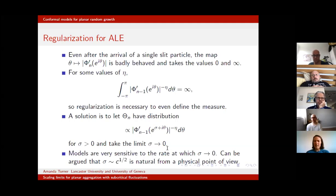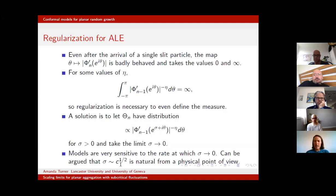We need to know at what rate to let σ tend to zero. Physicists argue that σ chosen roughly like √C is most natural from a physical point of view, but our results depend very heavily on this rate. It really matters how we allow this regularization parameter to tend to zero.